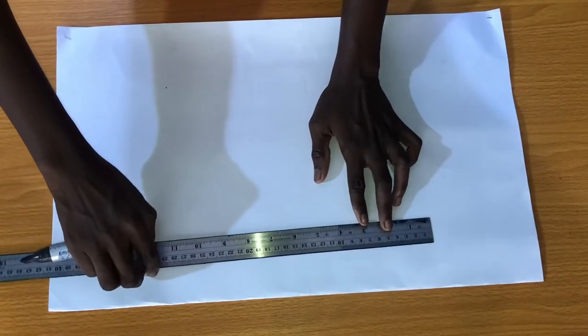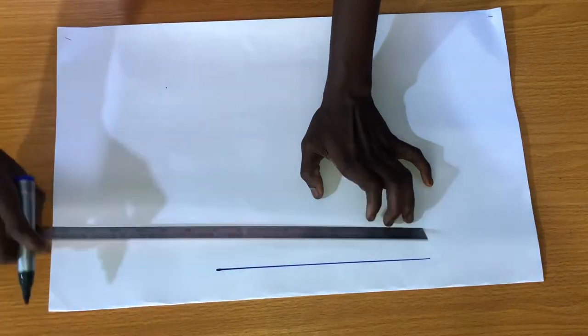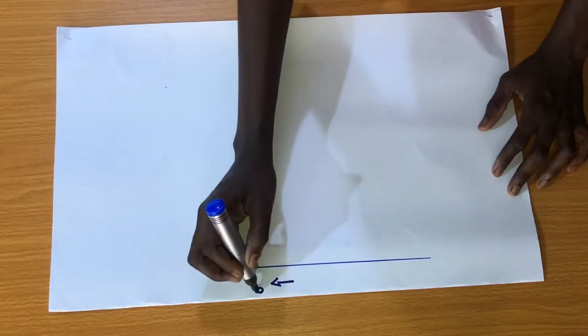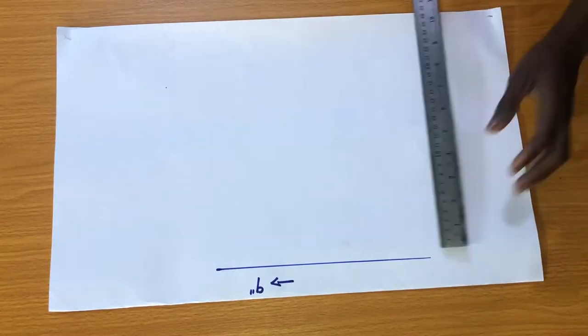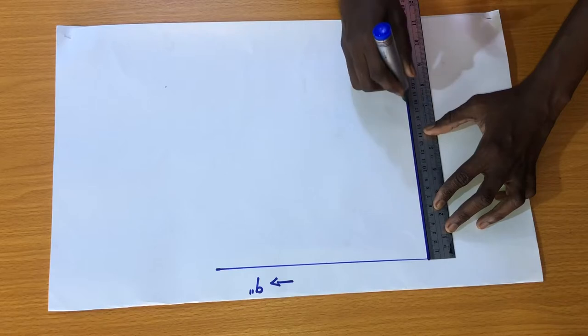So the first step is to take the horizontal measurements which is nine inches. And the next step is to take the vertical measurements which is 7.5 inches.